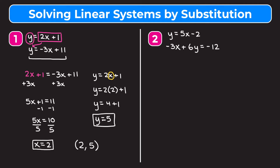For example 2 we have y equals 5x minus 2 and negative 3x plus 6y equals negative 12. Again, y is already isolated in the first equation, so we skip the isolation step. We know y equals 5x minus 2, so we plug that expression into the second equation: negative 3x plus 6 times (5x minus 2) equals negative 12.